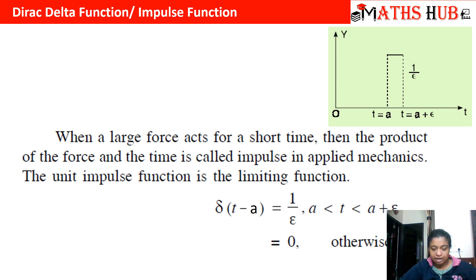The unit impulse function is the limiting function when t lies between a and a plus epsilon. Now what happens when this epsilon approaches to 0?